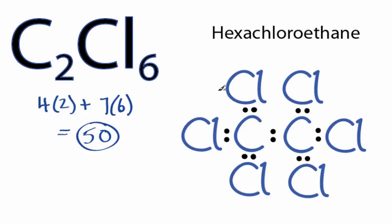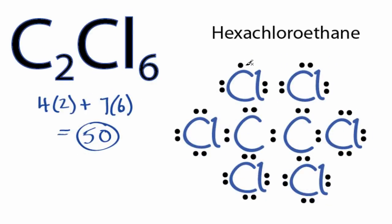We have 14, 16, and 50 valence electrons. So we've used all 50 valence electrons for the C2Cl6 Lewis structure.